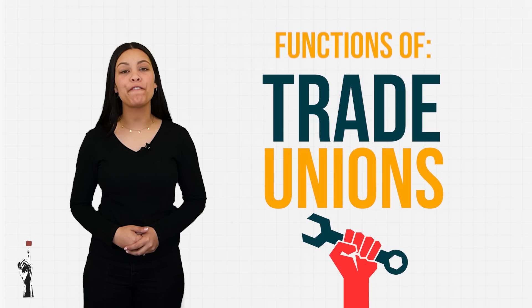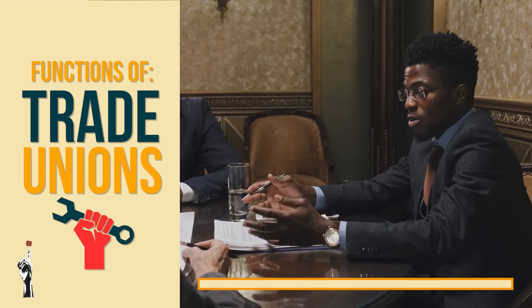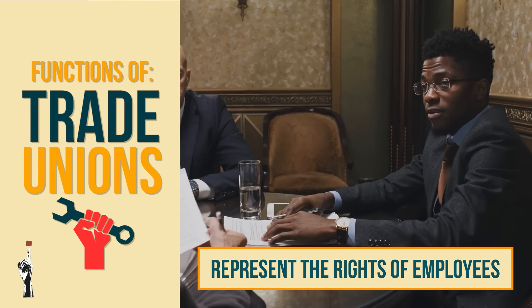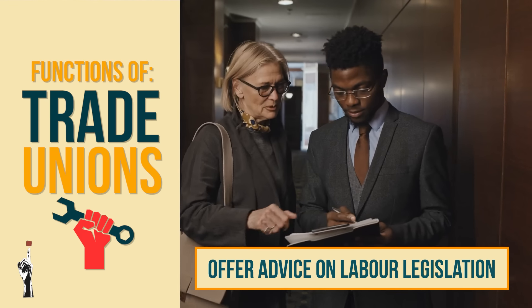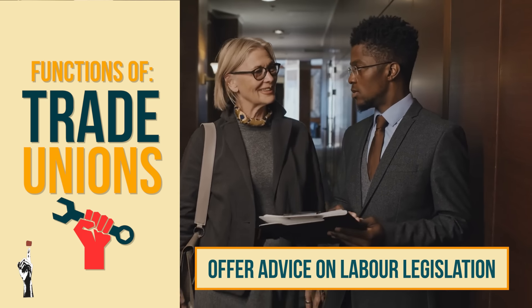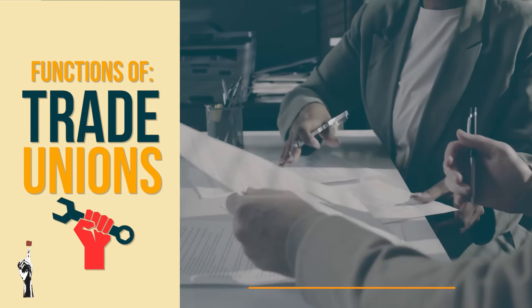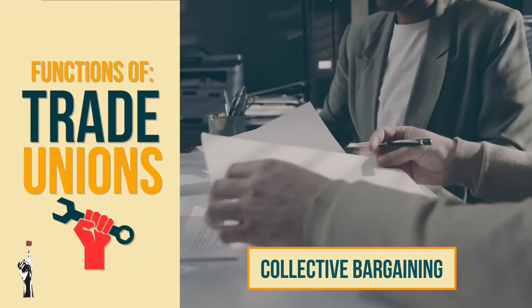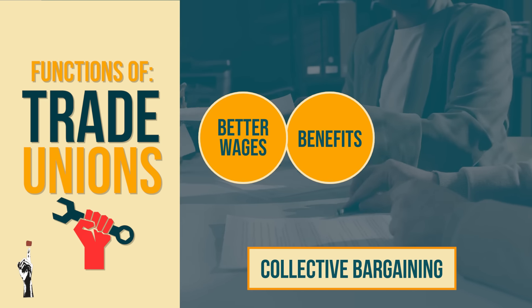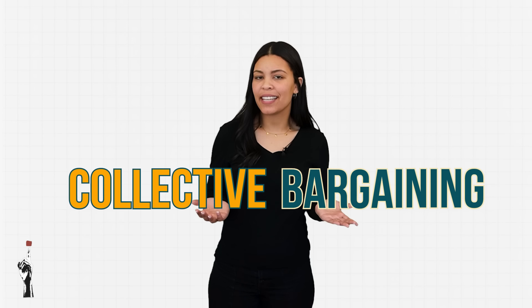Let's have a look at the functions of a trade union. Trade unions represent the rights of employees in a particular industry and during disciplinary hearings. They offer advice to employees on labour legislation such as the Basic Conditions of Employment Act. They also participate in collective bargaining with employers on behalf of employees over issues such as better wages, benefits and working conditions.